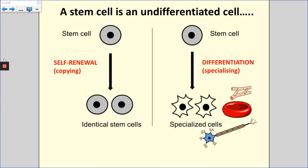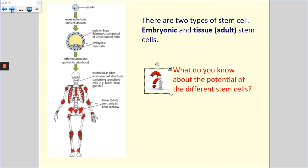A stem cell is undifferentiated - it is not a specialised cell. But they are able to specialise; they can undergo that process of differentiation and become a specialised cell, as you can see in the diagram on the right hand side. Stem cells can also self-renew, so they can divide and make more identical stem cells.